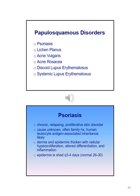The next slides discuss papulosquamous disorders which include psoriasis, lichen planus, acne vulgaris, acne rosacea, discoid lupus erythematosus, and systemic lupus erythematosus. Psoriasis is a chronic relapsing proliferative skin disorder. The cause is unknown; it's often related to family history or human leukocyte antigen associated inheritance.